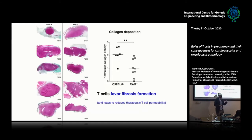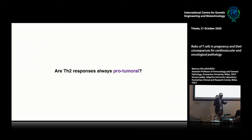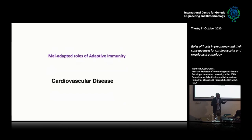However, tumors that grew in the absence of T-cells had half as much fibrosis. If you add extra T-cells, they can permeate these tumors much more — meaning T-cells favor fibrosis formation. Pro-inflammatory T-cells are unexpectedly pro-fibrotic. This would mean it makes sense to do anti-fibrotic treatments while doing T-cell-based therapies, since some of the T-cells you're boosting could actually create fibrosis and make things more difficult. Whether pro-fibrotic T-cells are always pro-tumoral is another story.